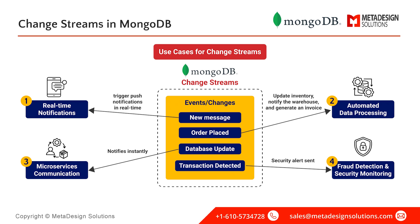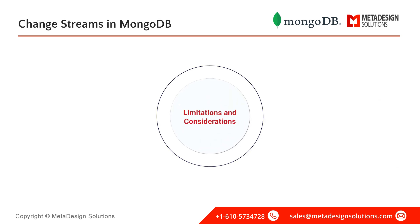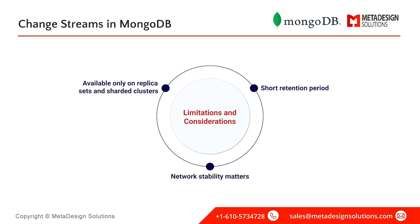For fraud detection and security monitoring, banks and financial services can use change streams to monitor unusual transactions, triggering alerts when suspicious activities are detected. While change streams are powerful, they come with some considerations: they are available only on replica sets and sharded clusters, so standalone deployments don't support them. They also have a short retention period, meaning changes are stored only as long as the op log allows, and network stability matters since disruptions could cause missed events if not properly handled.